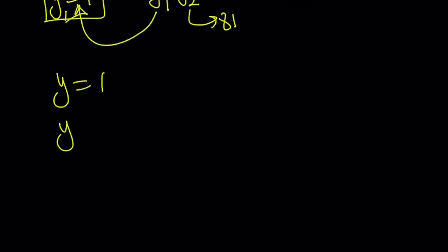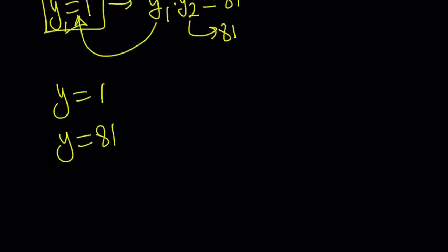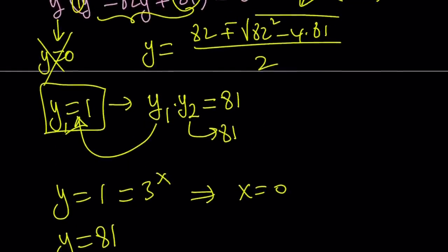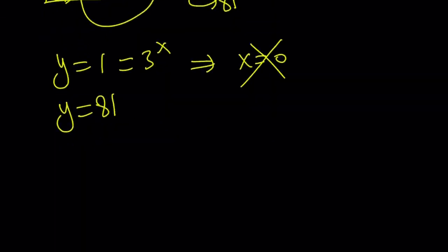So y equals 1 or y equals 81. But what is y? y is 3 to the power of x. So let's set it equal to 3 to the power of x. If 3 to the power of x is equal to 1, then from here x is equal to 0. But remember, x equals 0 is problematic, and you don't want that. But if 3 to the power of x is equal to 81, from here x is equal to 4, and that is a valid solution. So y equals 81 implies x equals 4, and that is our solution.